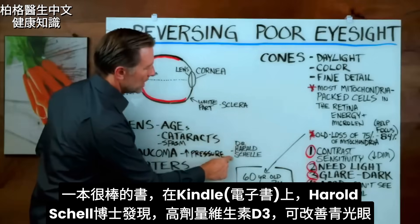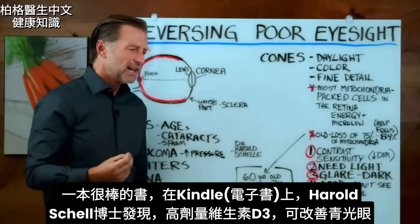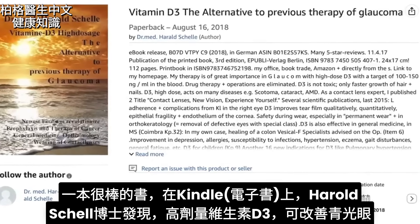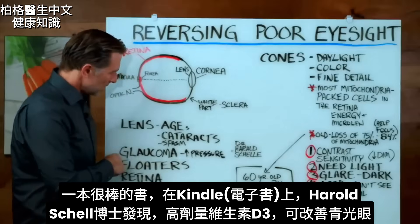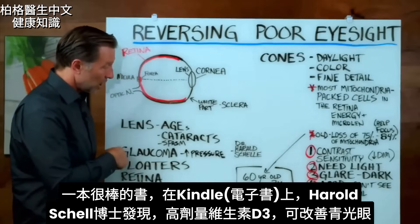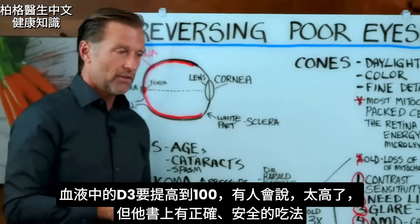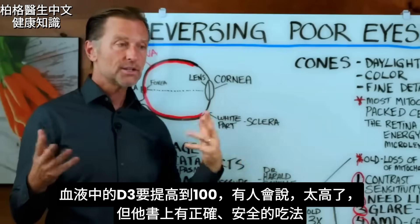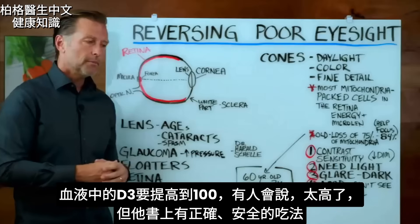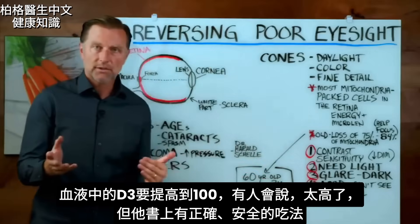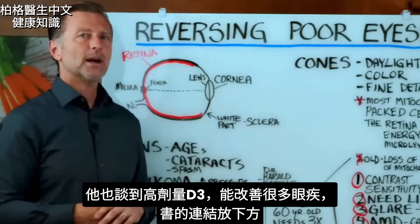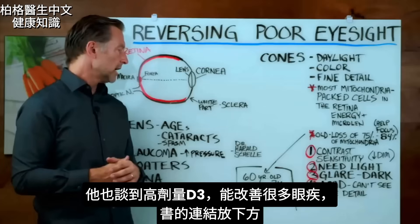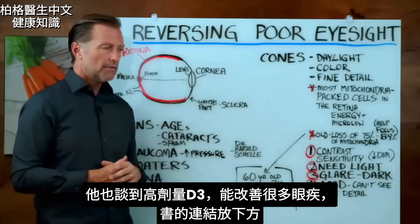I want to mention another great book that's really hard to find — I think you can only find it on Kindle. The author is Dr. Harold Schell. He found that high doses of vitamin D3 can reverse glaucoma, but you have to get your blood levels up to around 100. For some people that seems like too much, but if you read his book, it's fascinating because he gets into how to do it correctly and safely. He also talks about a lot of other eye problems that can be improved with higher doses of vitamin D3. I will put a link below for that book.